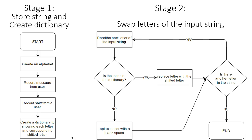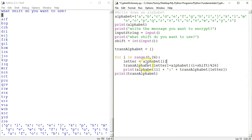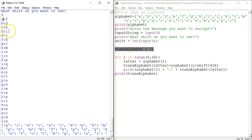Hello and welcome. In this tutorial we are going to continue and complete the second stage of the Caesar Cipher Python program. In the last stage we created a dictionary that we called TransAlphabet. This dictionary translates from normal letters into a shifted letter, into a cipher text of any shift that we specified.